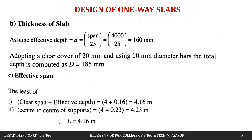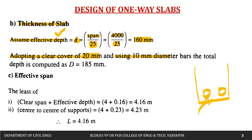First, let us fix the thickness of the slab. Assuming l/d ratio = 25, effective depth d = span/25 = 4000/25 = 160 mm. Assuming 20 mm clear cover and 10 mm diameter bars, the overall depth = 160 + 5 + 20 = 185 mm.